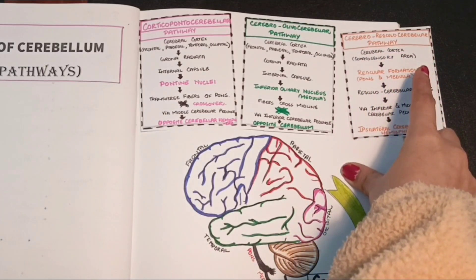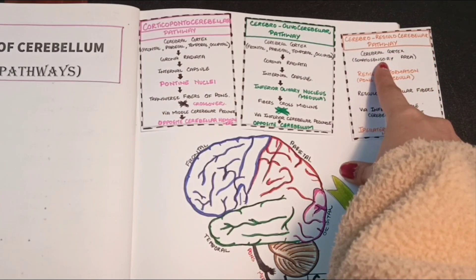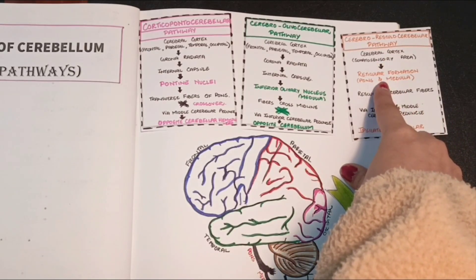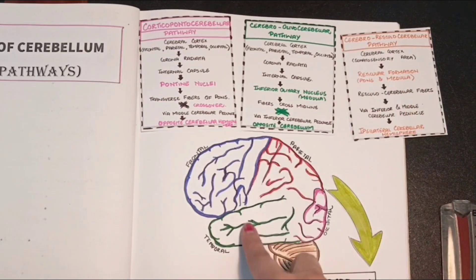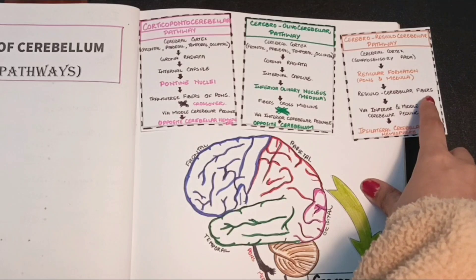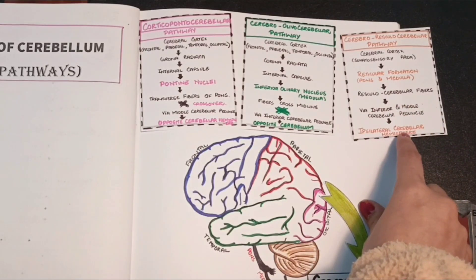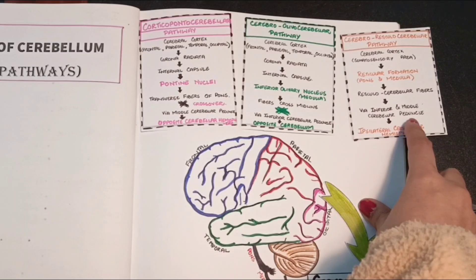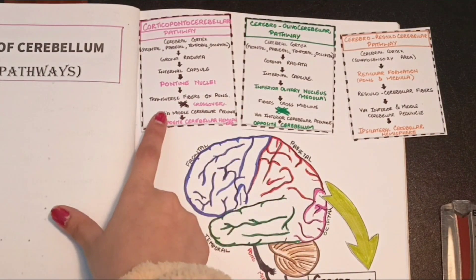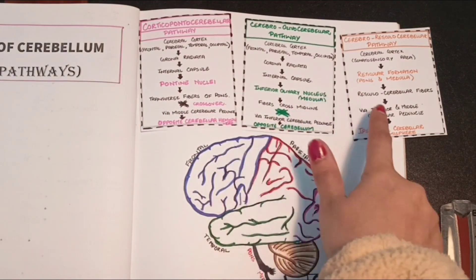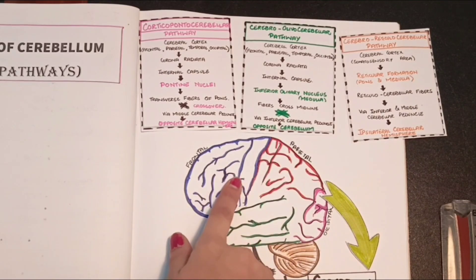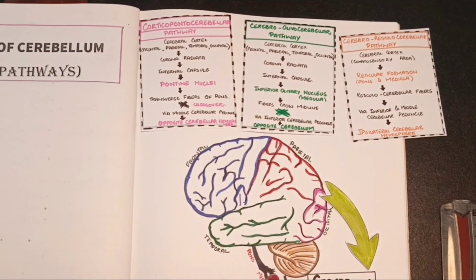The third pathway from the cerebral cortex sending afferent information to the cerebellum is the cerebro-reticulo-cerebellar pathway. Starting from the cerebral cortex, particularly its somatosensory area, the fibers reach the reticular formation at the level of the pons and medulla. From there, the fibers — now called reticulocerebellar fibers — enter the ipsilateral cerebellar hemisphere via the inferior and middle cerebellar peduncles. So all three pathways — corticopontocerebellar, cerebro-olivo-cerebellar, and cerebro-reticulo-cerebellar — send information from the cerebral cortex to the cerebellum via the brainstem.